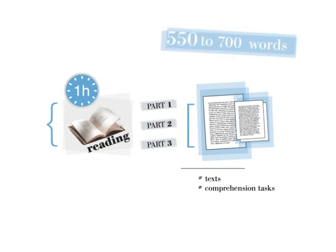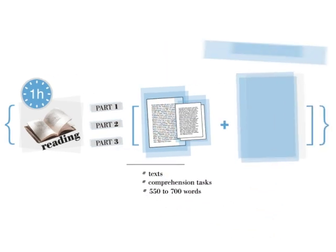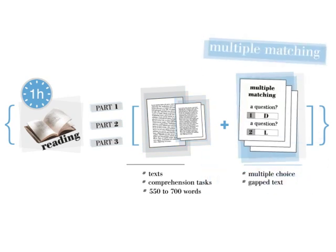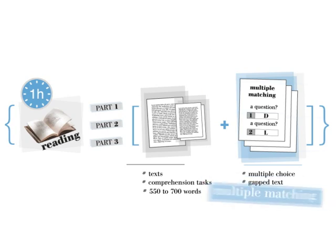Generally, there are 550 to 700 words per text. The task types are multiple choice, gapped text, and multiple matching. We will look at each individually.